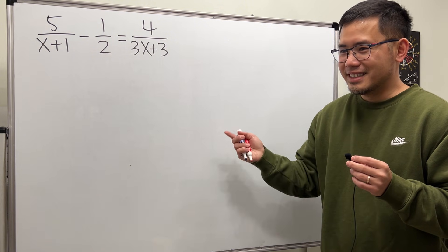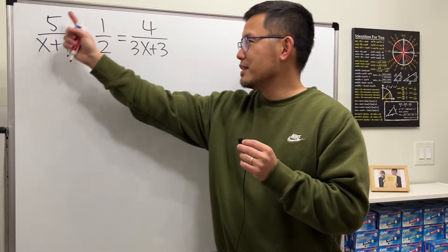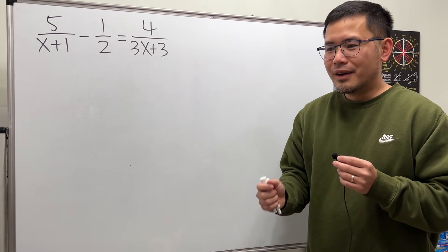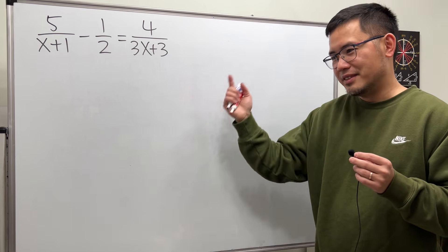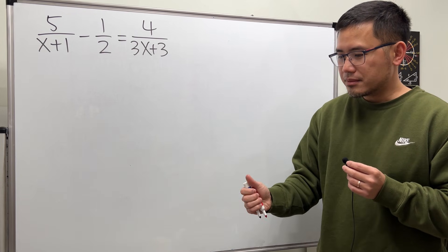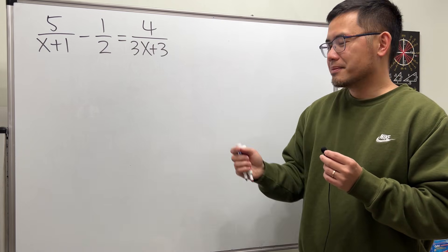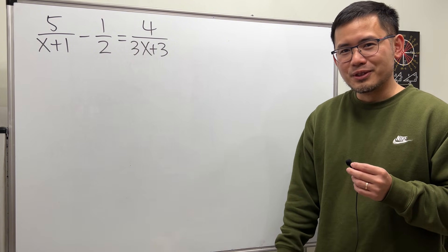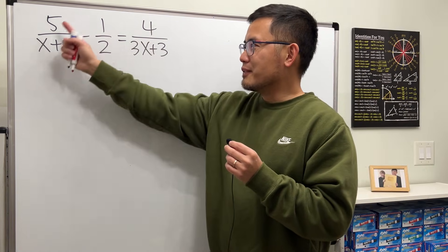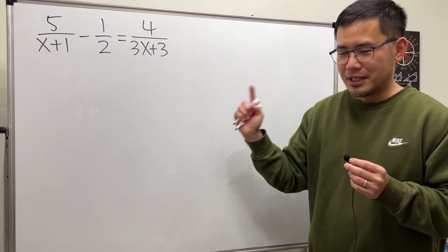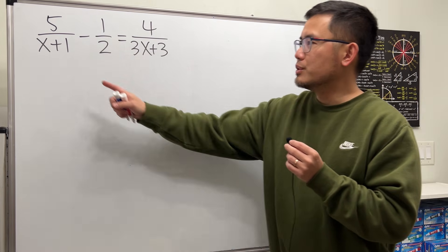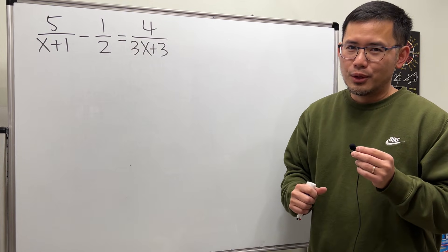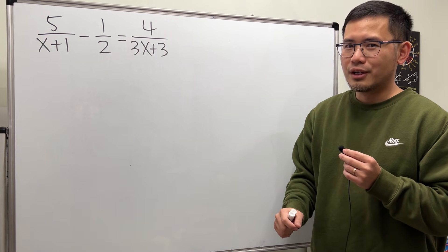All right, so this is actually my second take — I'm going to fix this for you. So now you know math teachers also make mistakes. Anyway, let's go ahead and solve this rational equation correctly this time. What we do first is just look at all the denominators and try to factor them.